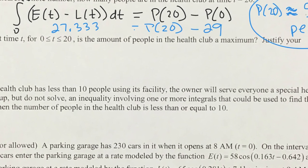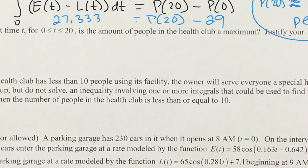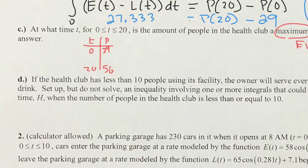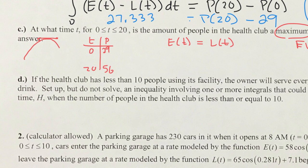Part c asks when we have a maximum. This uses the Extreme Value Theorem (EVT), which means we check the endpoints: 0 and 20. At t=0 there are 29 people, and at t=20 there are 56. We also need to check if there's a critical point inside — specifically when are the people entering equal to the people leaving? That would mean no change, a slope of zero, which represents the top.